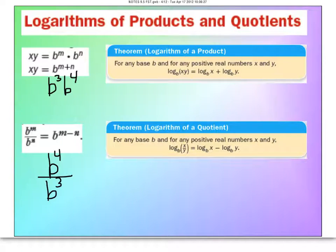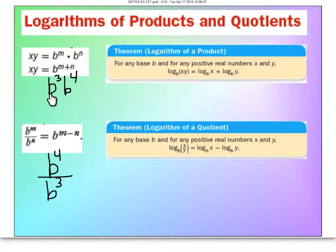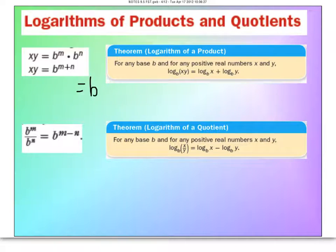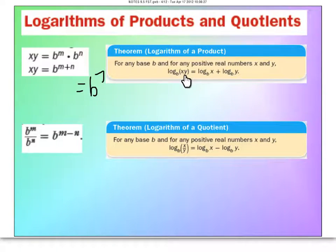Two more theorems: the product theorem and the quotient theorem. Remember, logarithms are just another form of exponents, so they have the same properties. With exponents, multiplying b to the m times b to the n means you add the exponents — for example, b cubed times b to the 4th equals b to the 7th. The same applies here: multiplication in the exponent world means addition. So log of x times y becomes log of x plus log of y.